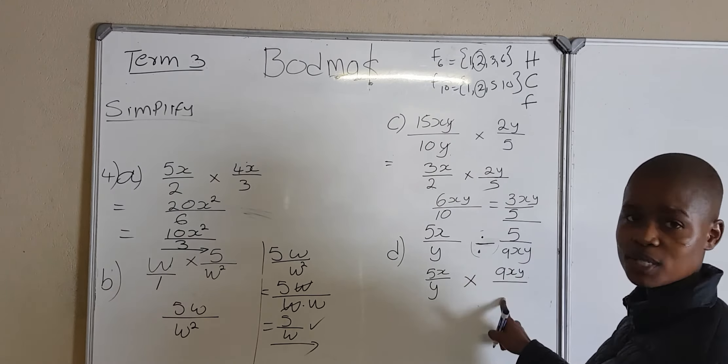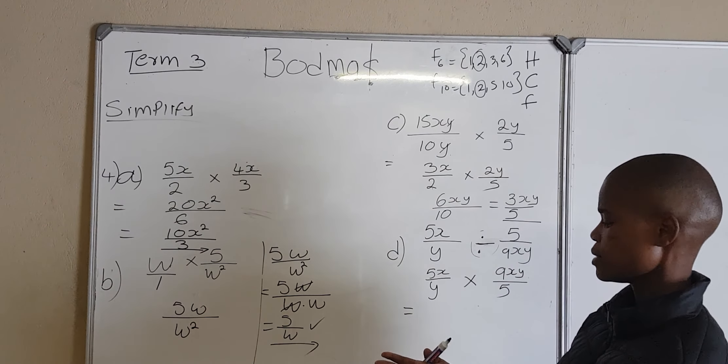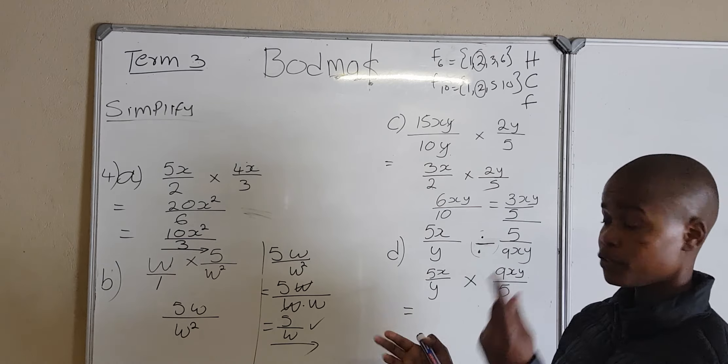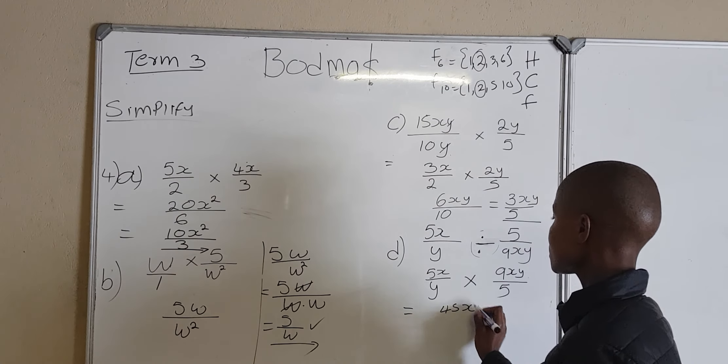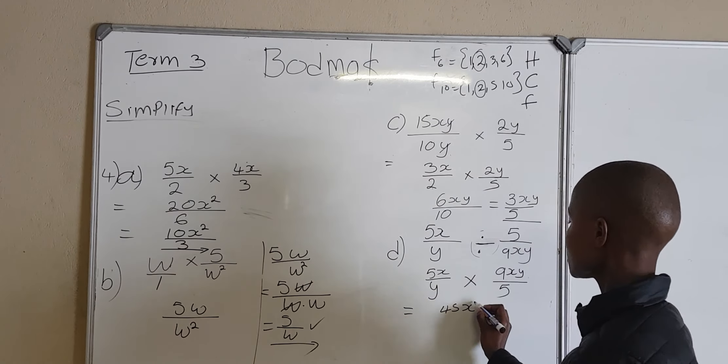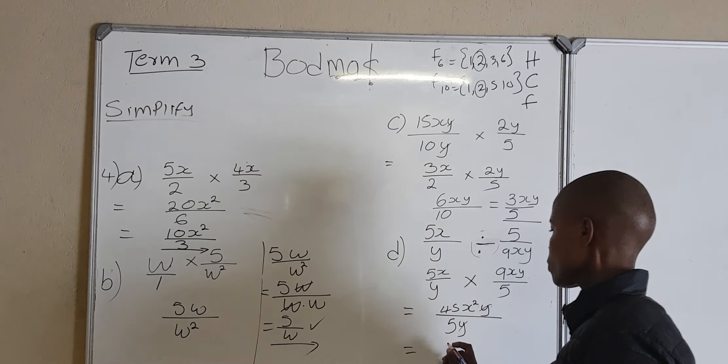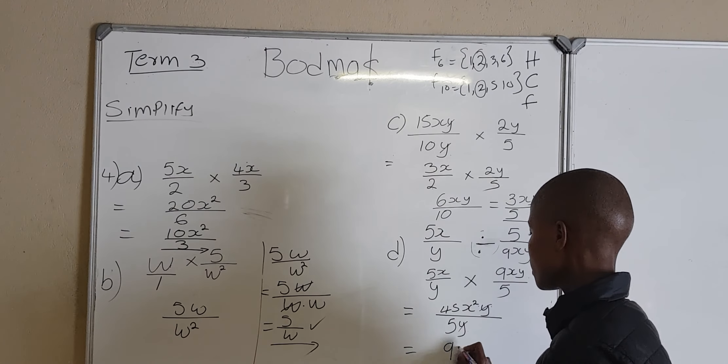5 multiplied by 9 gives 45. So it's going to be 45x times x, which is x squared, and then y in the numerator. 5 times y is going to be 5y in the denominator. We have a y there and a y there — y divides y and we no longer have a y. Then 45 divided by 5 goes 9 times. Our final answer is 9x squared.